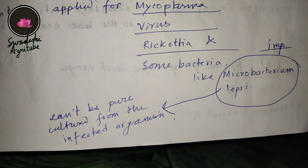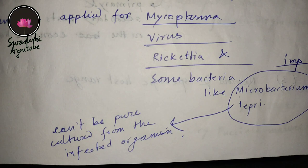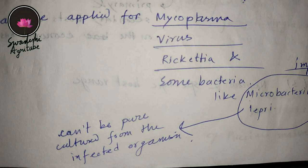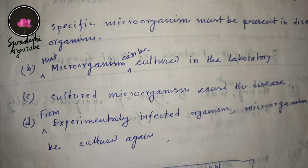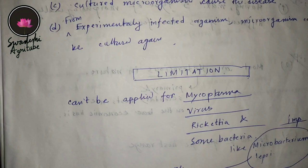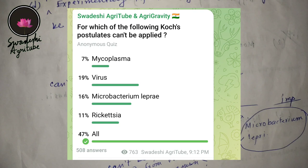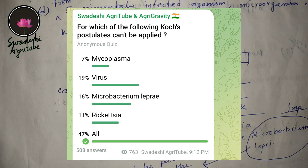Bacteria generally maintain Koch's postulates, but some bacteria like Mycobacterium leprae do not. This is important and comes in your exam. This bacterium does not satisfy Koch's postulates because it cannot be pure cultured from the infected organism — it does not maintain the third point. It maintains the first and second points but not the third. So the answer to the quiz question includes mycoplasma, virus, rickettsia, and Mycobacterium leprae — all of these are not maintaining Koch's postulates.